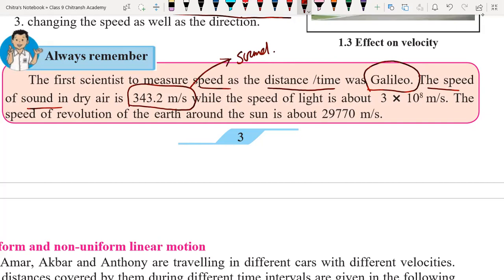Next, the speed of light is about 3 into 10 to the power 8 meters per second.